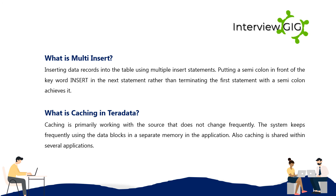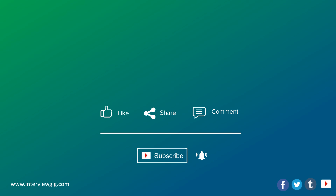What is caching in Teradata? Caching is primarily used with data sources that do not change frequently. The system keeps frequently used data blocks in a separate memory within the application. Caching is also shared within several applications.